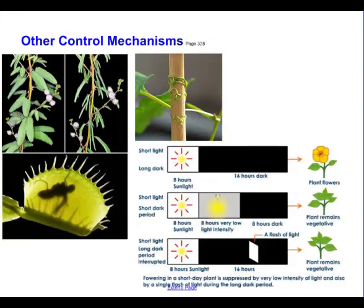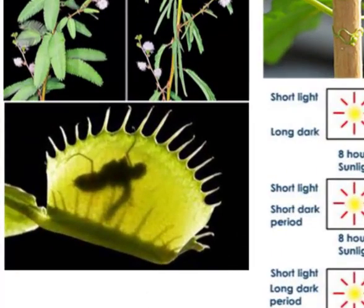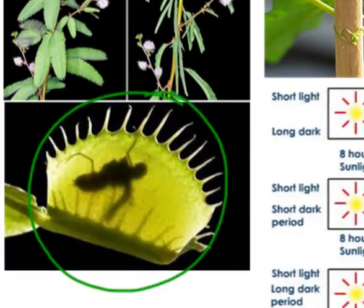Other control mechanisms exist, and we're going to show you some videos of these in class. The one we want to show here is thigmotropism, and the most famous example is the Venus flytrap. It has highly modified leaves that spread open, and if a fly or an insect is dumb enough to step on it, it'll trigger the leaf to close like a sandwich and trap the insect.